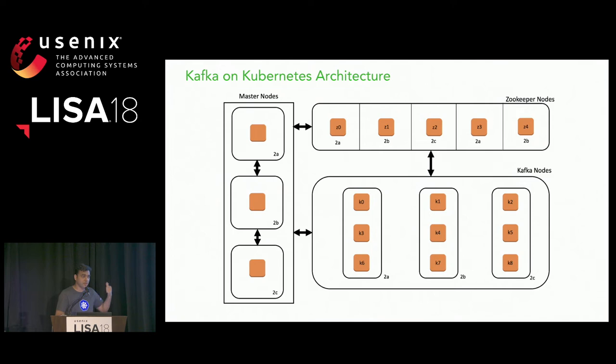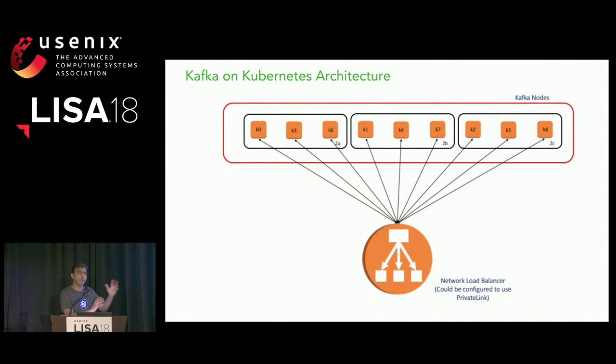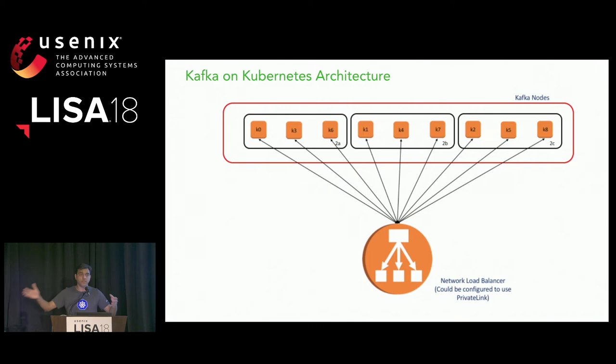Based on the requirements, we said we'd have about nine brokers — a good number because we could put three in each availability zone. Kafka as a client needs to be able to individually communicate with any broker, with actual communication happening per broker depending on topic and partition assignment. So we needed each broker to have an individually addressable IP from outside this AWS account.